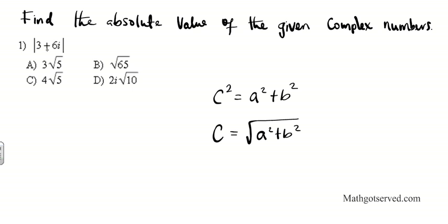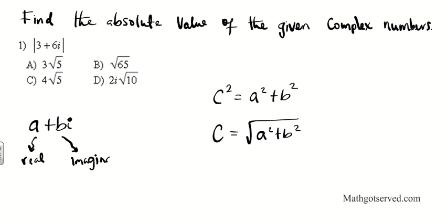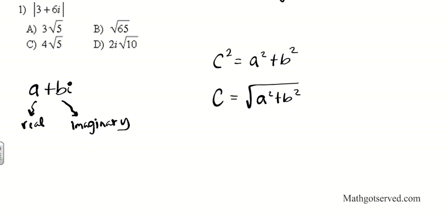So what is a and b in the context of a complex number? For a complex number a plus bi, the real part is a, and the imaginary part — the coefficient of i — is b. So if you take a look at this problem, 3 plus 6i, that is what we are looking for. For number 1 we are trying to find the absolute value of 3 plus 6i.